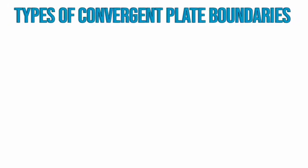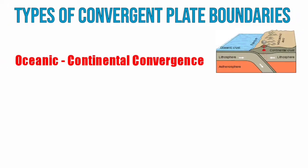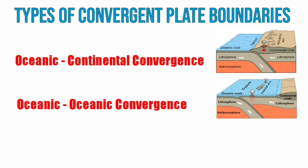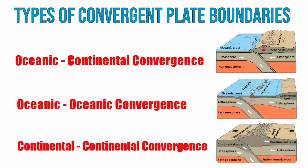There are three types of convergent plate boundaries. We have the oceanic-continental convergence, oceanic-oceanic convergence, and the continental-continental convergence.